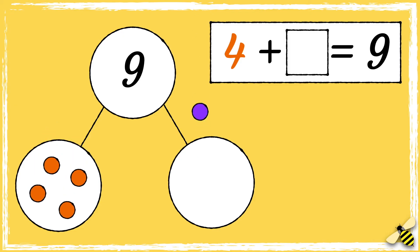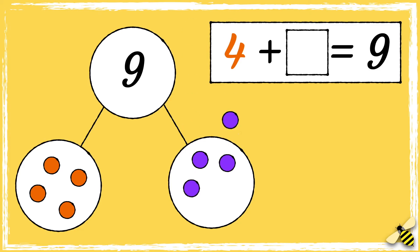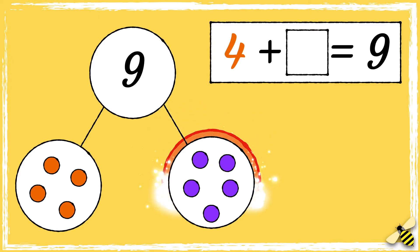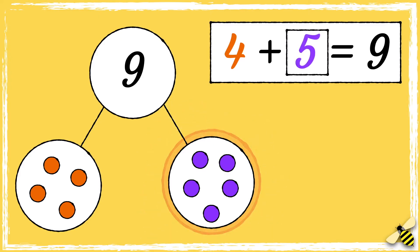Four, five, six, seven, eight, nine. How many purple spots did we add? We added five purple spots so five is the missing part.